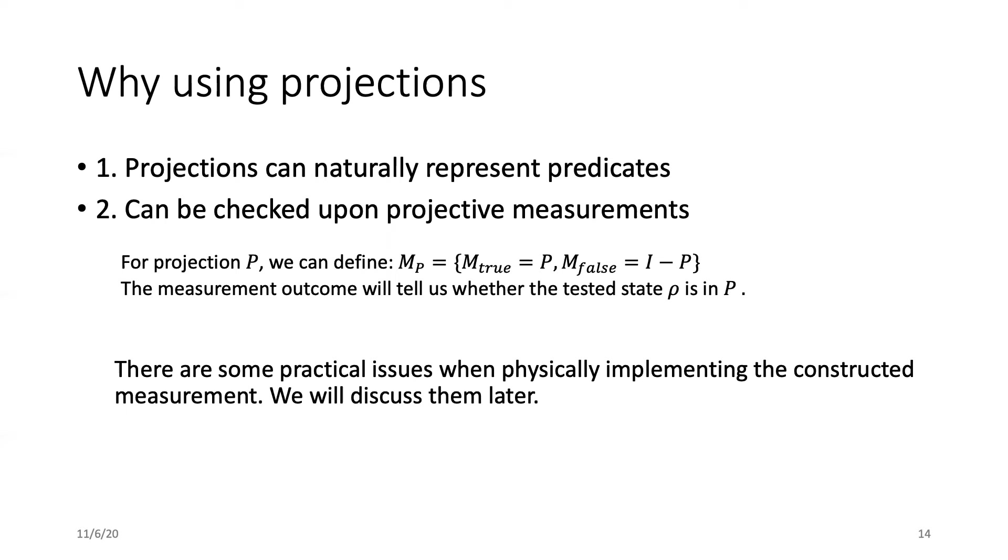for projection P we can construct a two output projective measurement. The measurement operator of the true outcome is just the projection itself. The other measurement operator is I minus P with output false and I is the identity operator in the Hilbert space. This measurement will directly tell us whether the test state is in P or not. There are some practical issues here when we need to implement this on the quantum computer and we will talk about them later.